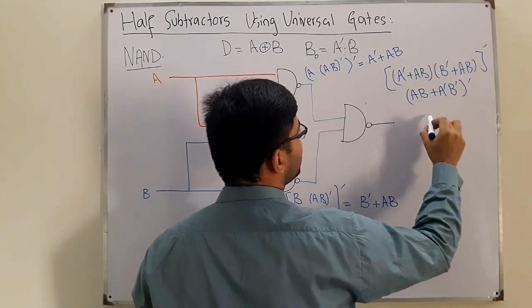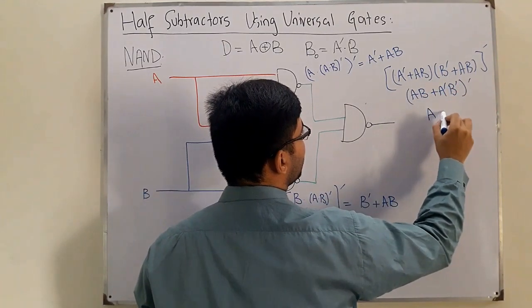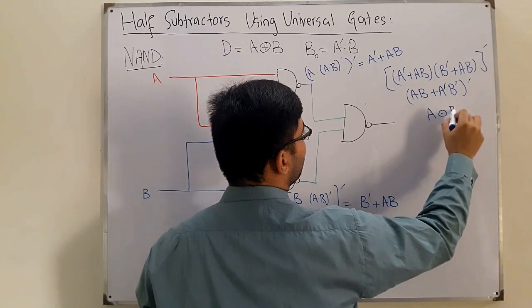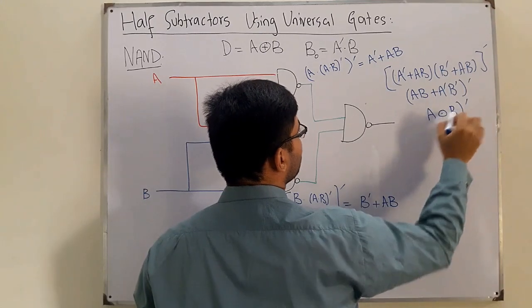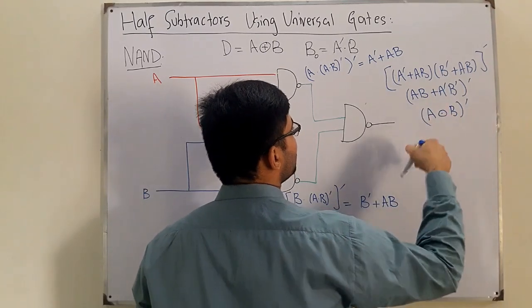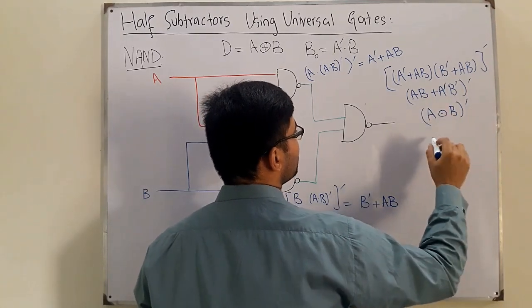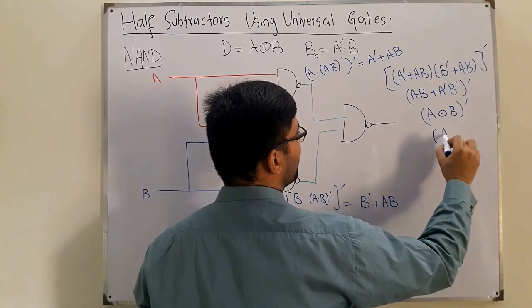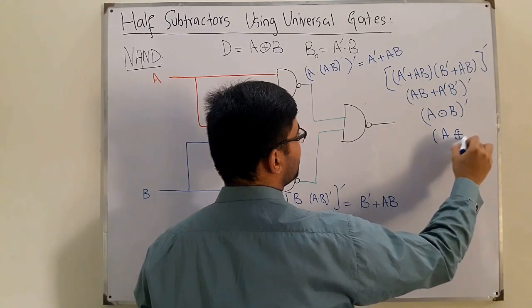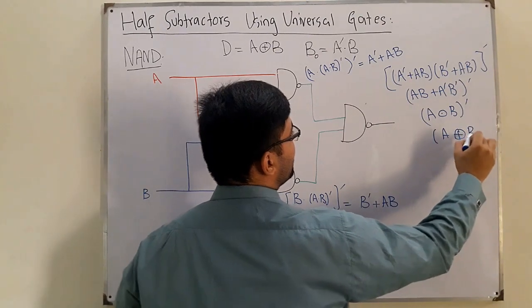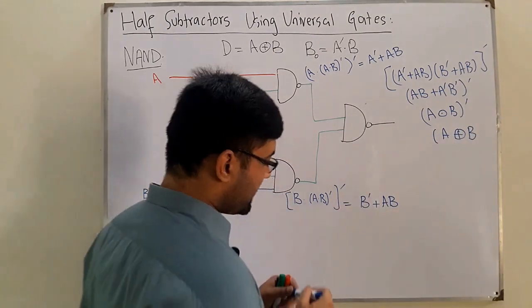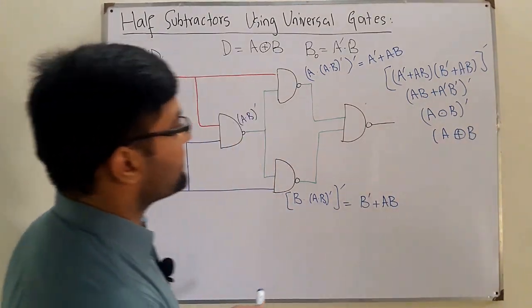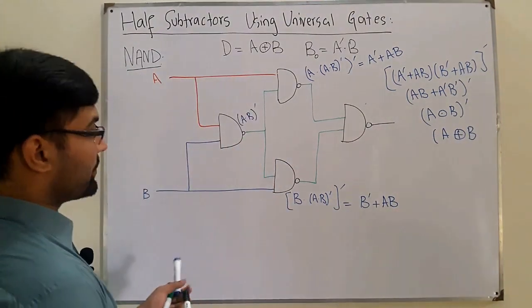This is the exclusive NOR operation, so we can write (A XNOR B)', and since the complement of exclusive NOR is exclusive OR, this gives us A XOR B — the difference output.